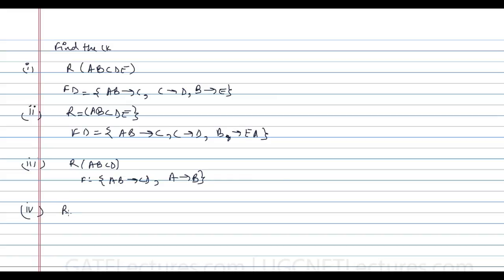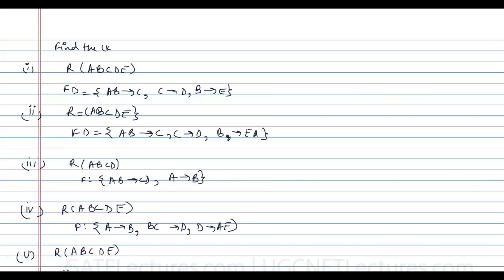Question four: R(A,B,C,D,E) with functional dependencies A→B, BC→D, and D→AE. Question five: relation R(A,B,C,D,E) with functional dependencies AB→C, CD→E, and DE→B. These are the given options. Now let us take the first option and find the candidate key.